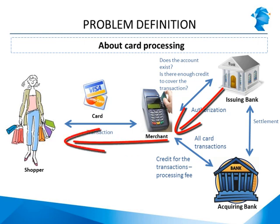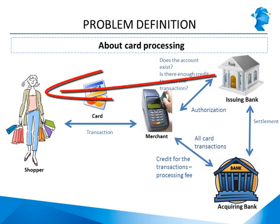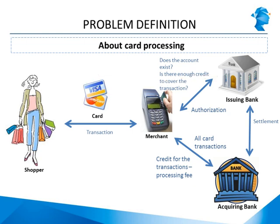Once the seller has received authorization from the issuing bank, he proceeds with the transaction. The seller now understands he can make a claim on the buyer's line of credit, but he still does not have the money. The issuing bank makes a payment to the acquiring bank, typically at the end of each day when all banks settle their claims against each other. The acquiring bank then releases this money into the seller's account. Meanwhile, the issuing bank posts the charge on the buyer's credit card, and the buyer makes his payment to settle the transaction.